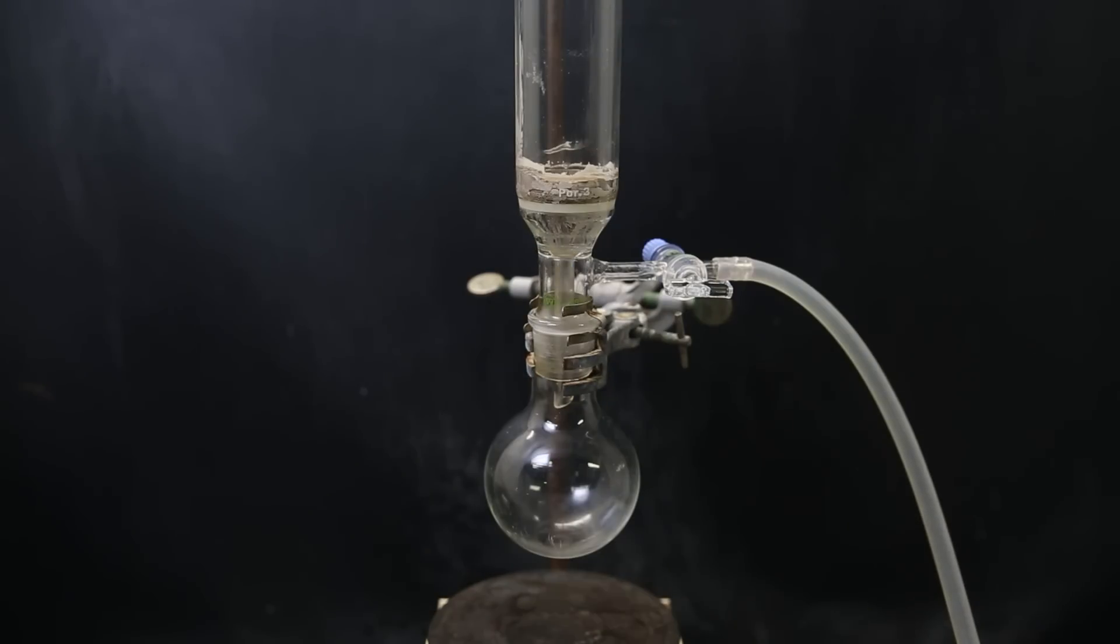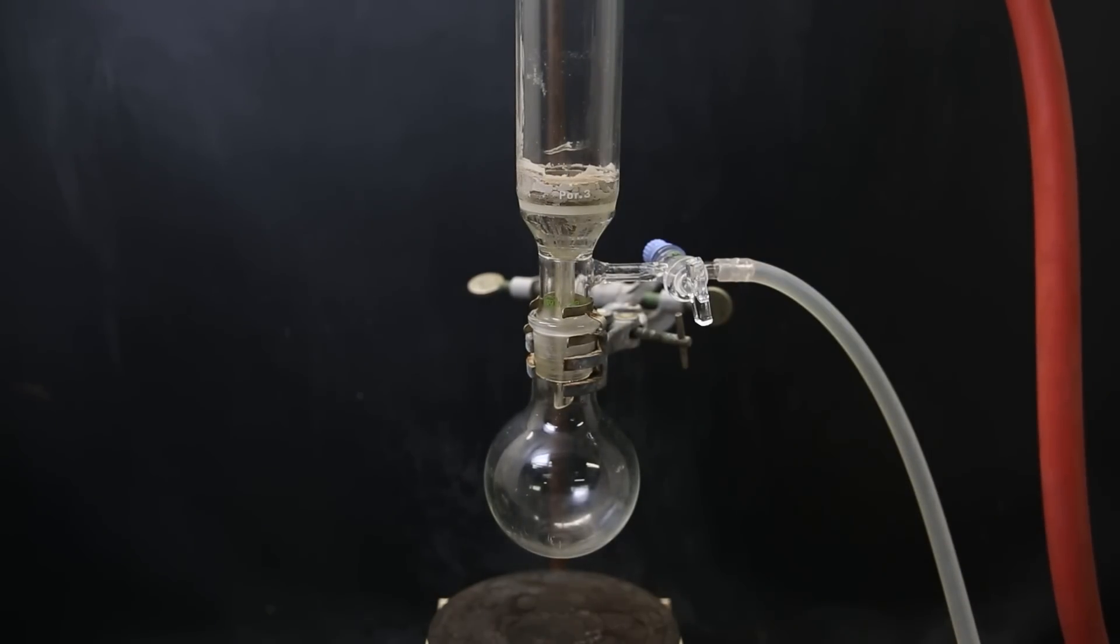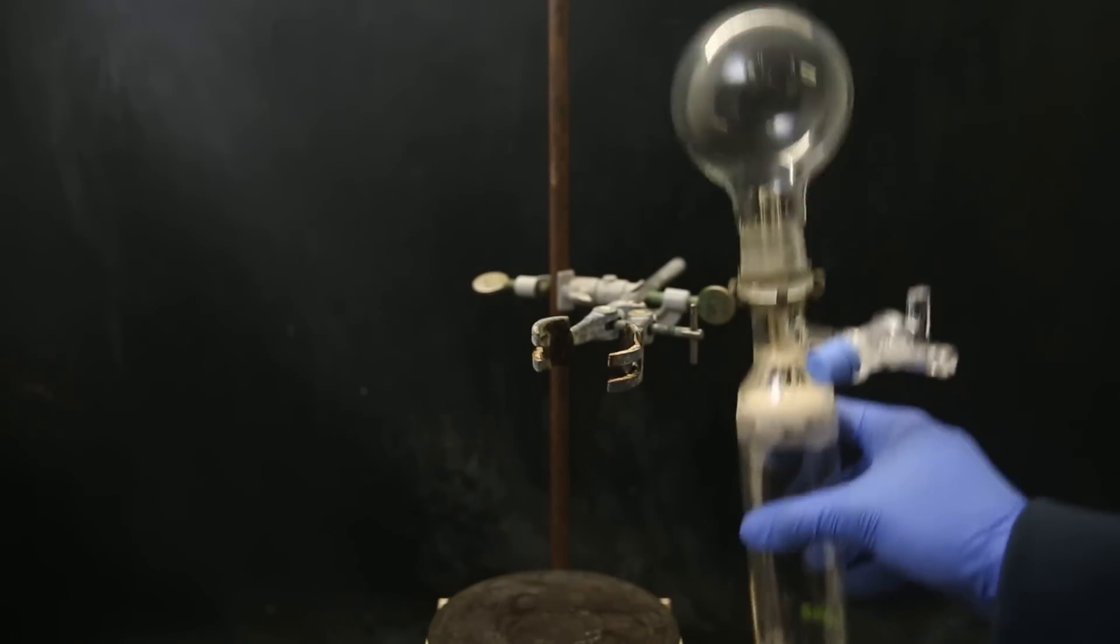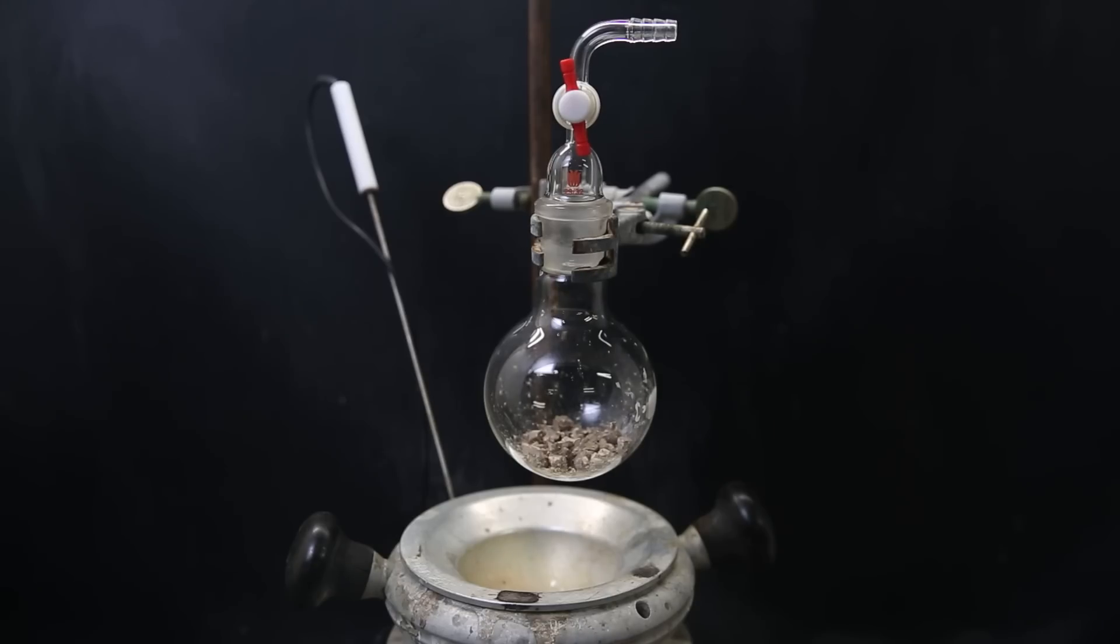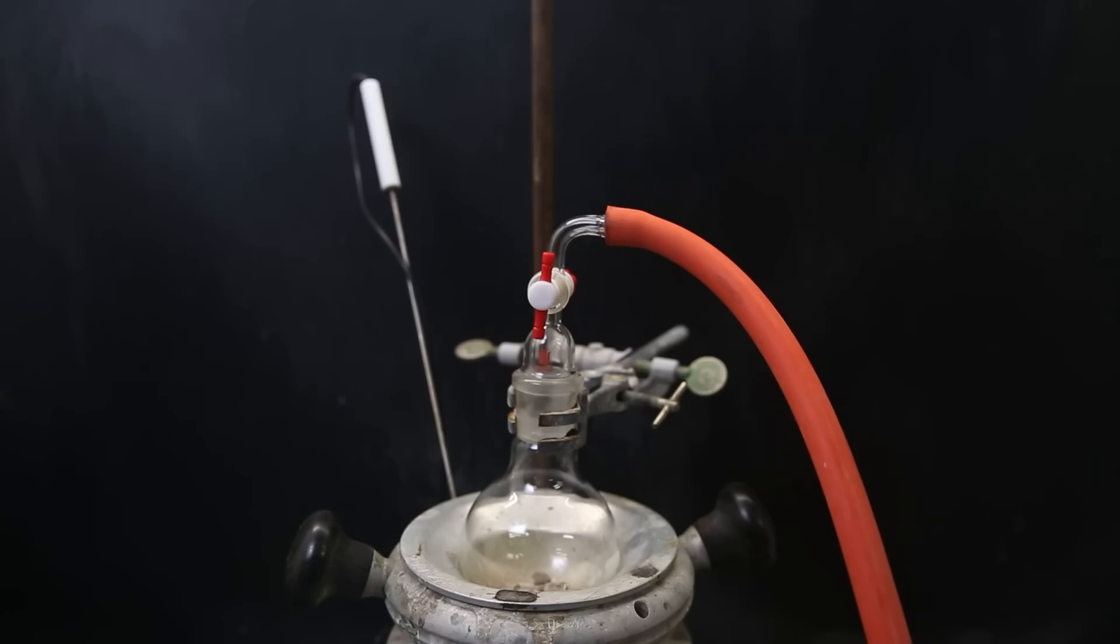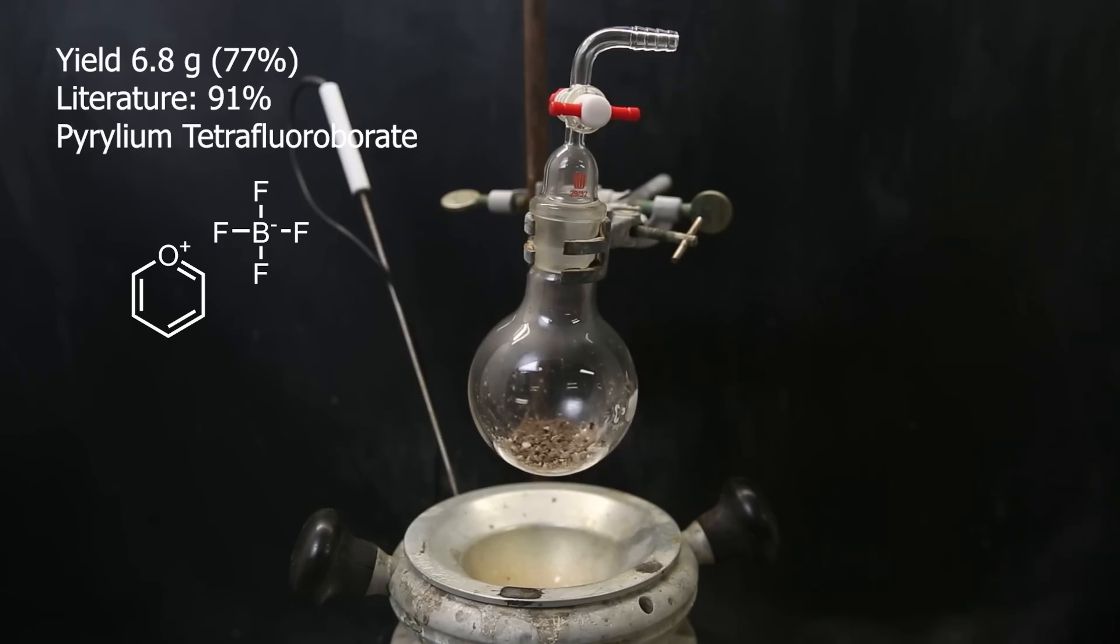I then dry out the residue both with a stream of nitrogen and then by pulling a vacuum. I tap it to make it fall down, and I scraped off the rest with a spatula. I am then left with the peryllium tetrafluoroborate as a brown solid, which is also brown in literature. It still contains some residual solvent, so I heat it very very slightly while pulling a vacuum to dry it out completely.